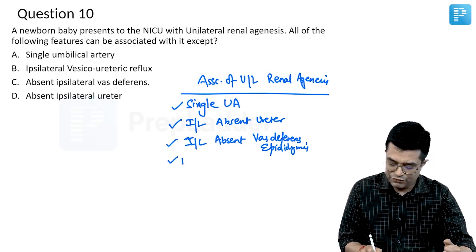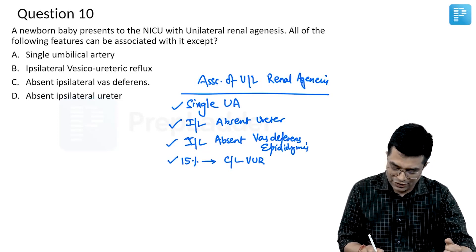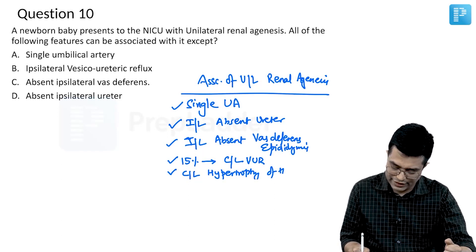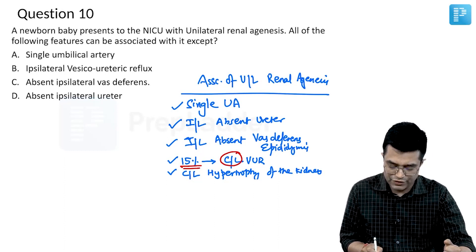Also, 15 percent of patients are found to have contralateral hypertrophy of the kidney — so the opposite kidney may be slightly enlarged. VUR will be present in the contralateral kidney, and that too in 15 percent of cases.